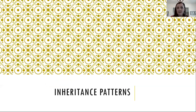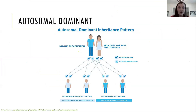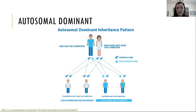I want to go into a little bit about the inheritance patterns — how genes are passed down in families and how conditions are passed down in families. One of the first ones I want to talk about is autosomal dominant inheritance. We have two copies of every chromosome, so for every gene on that chromosome we also have two copies — one coming from mom and one coming from dad. In an autosomal dominant condition, only one of those two copies has to have what we call a harmful difference or a pathogenic variant, where that's actually changing the way that gene functions.